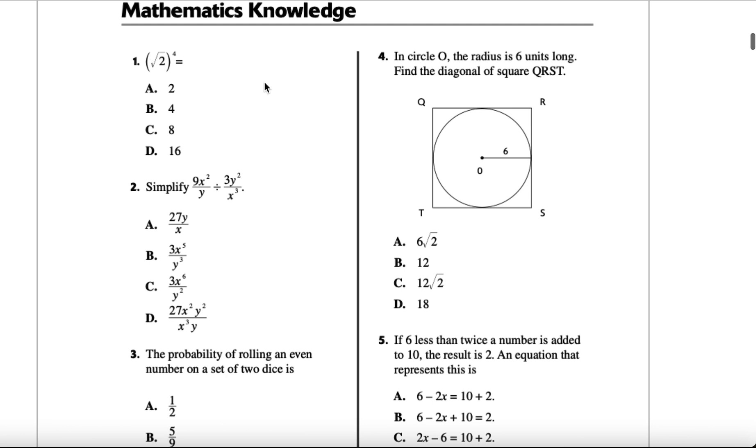The first question is the square root of 2 to the 4th power equals what? We can treat the square root as divided by 2, because the square root is typically 1 half. Any number to the 1 half power is the square root. So this becomes 2 to the 2, and we all know that 2 to the 2nd power is B, which is 4.